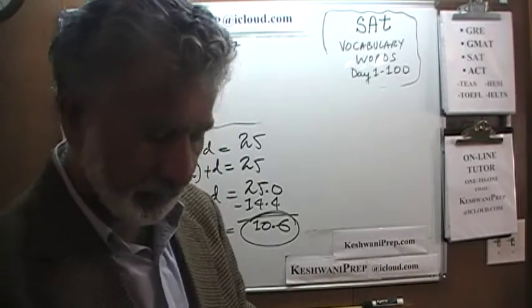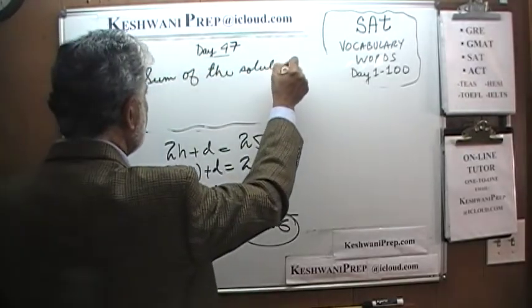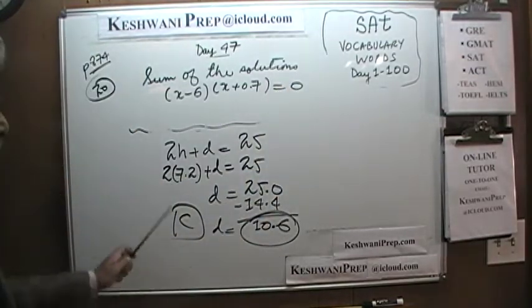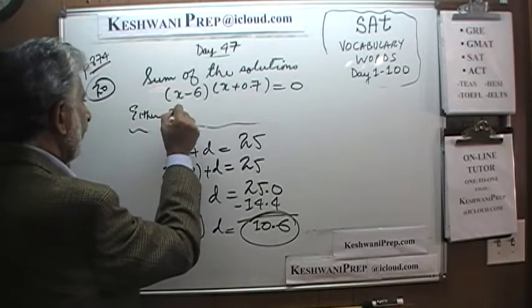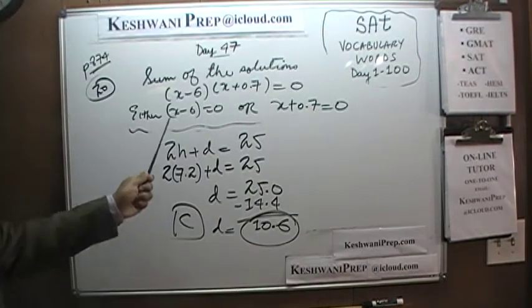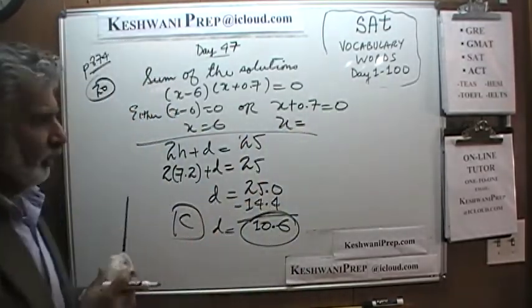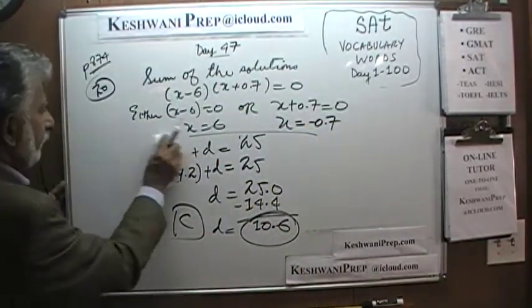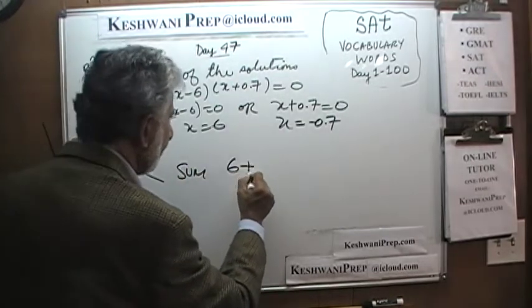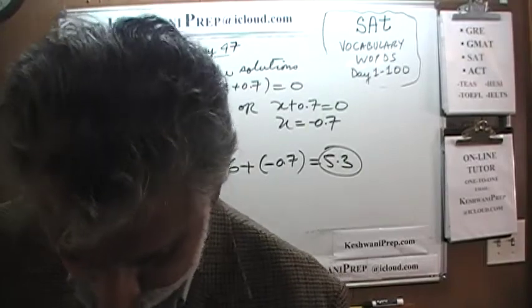Number 19 was a hard one, not a medium one. Now we are back to our regular scale with number 20. We are looking for the sum of the solutions to the equation. Either (x − 6) = 0 or (x + 0.7) = 0, giving x = 6 or x = −0.7. The sum of the solutions is 6 + (−0.7) = 5.3.